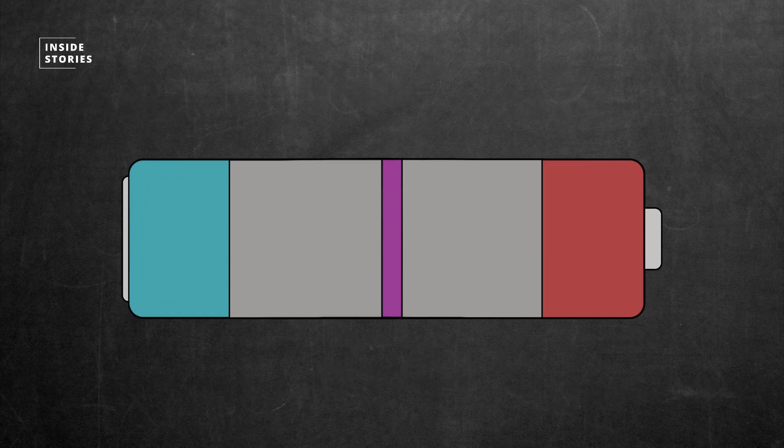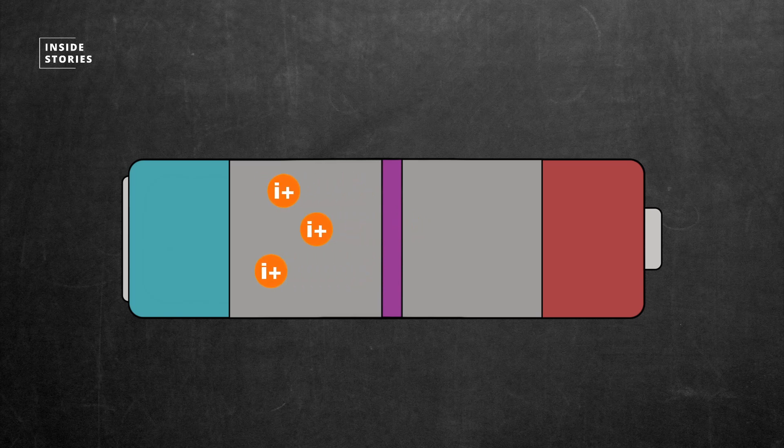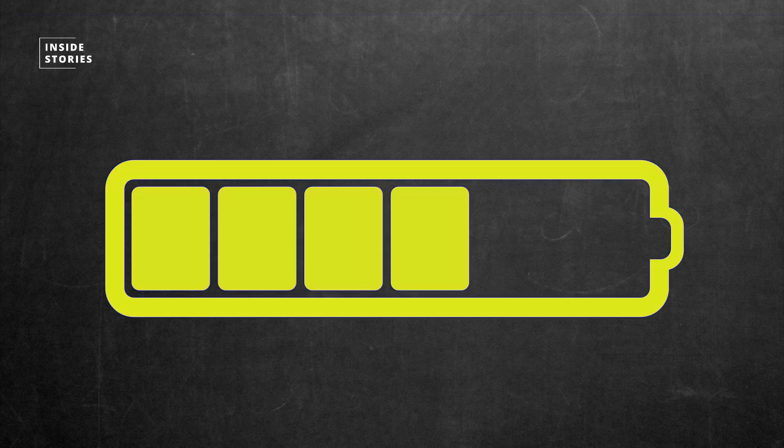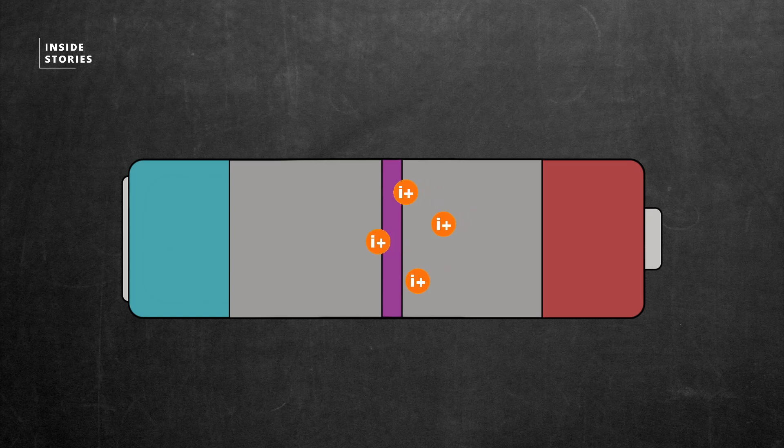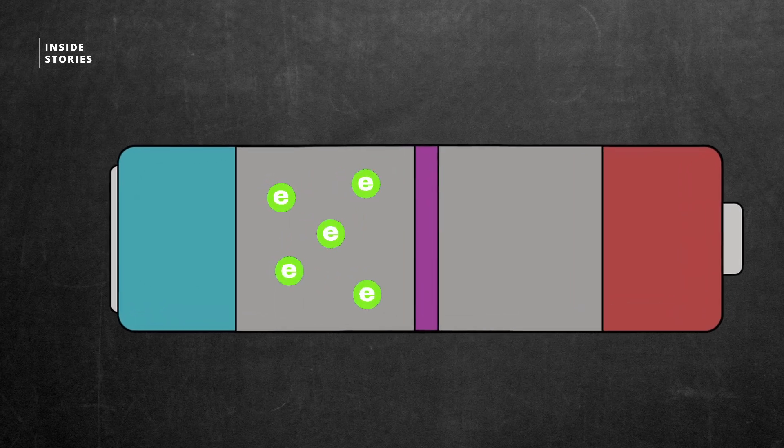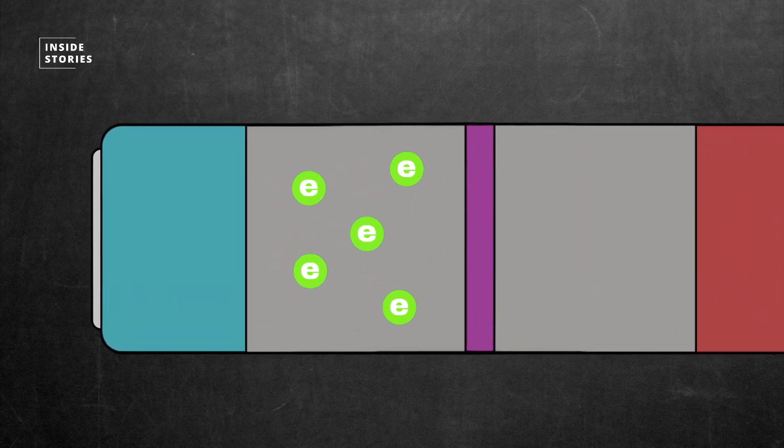In a lithium-ion battery, positively charged lithium ions move between the cathode and the anode inside of the electrolyte. When the battery is charged up, the lithium cobalt oxide positive cathode gives up some of its lithium ions, which move through the electrolyte to the negative graphite anode and remain there. The movement of the lithium ions creates free electrons in the anode.